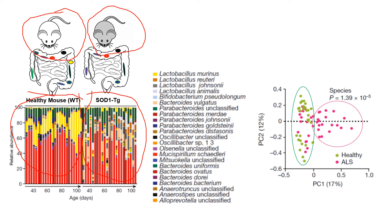When they conducted similar studies in humans, they found that human ALS patients indeed have a different content of bacteria compared to healthy controls, as seen in this graph where the ALS patients cluster together and group differently compared to healthy humans, suggesting that the proportion, content, and type of bacteria differs between the two groups.